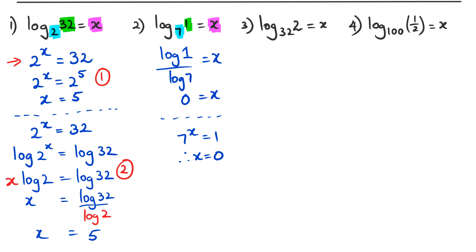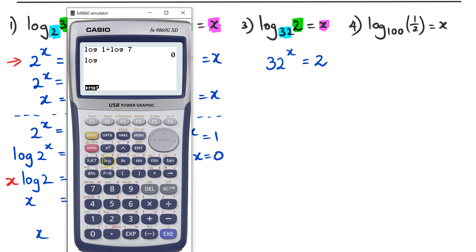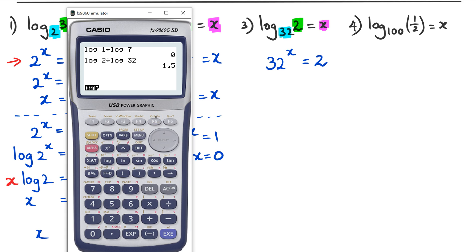Question three: 32 is the base, x is the power, and 2 is the answer, so we have 32^x = 2. This is different — before we had 2^x = 32, now it's reversed. Since 32 is 2 to the power of 5, going backwards we expect x = 1/5. Using the calculator: log(2) / log(32) = 0.2, which is the same as 1/5.